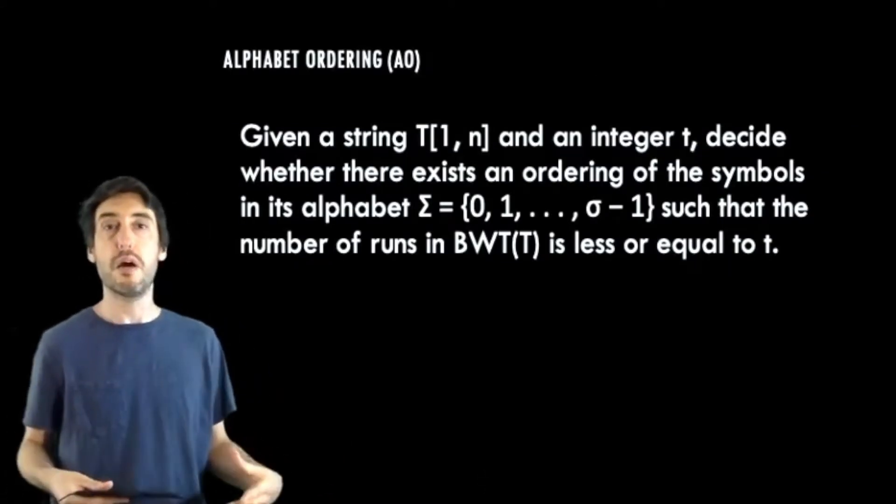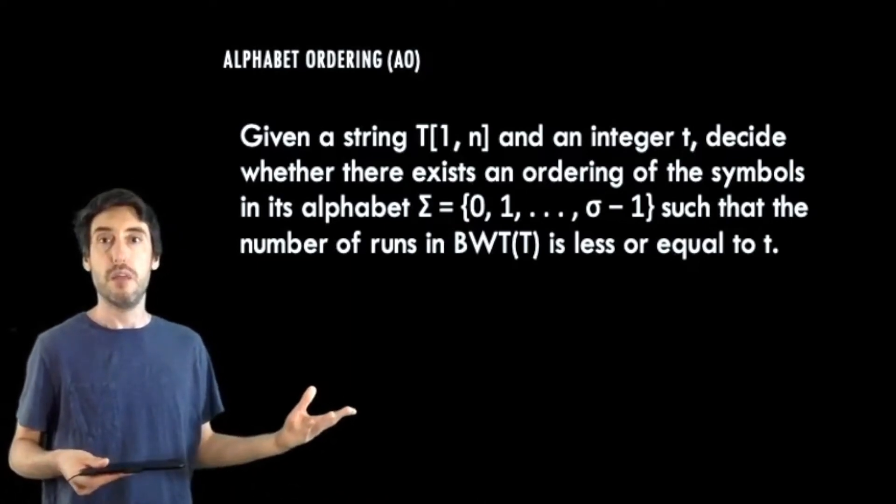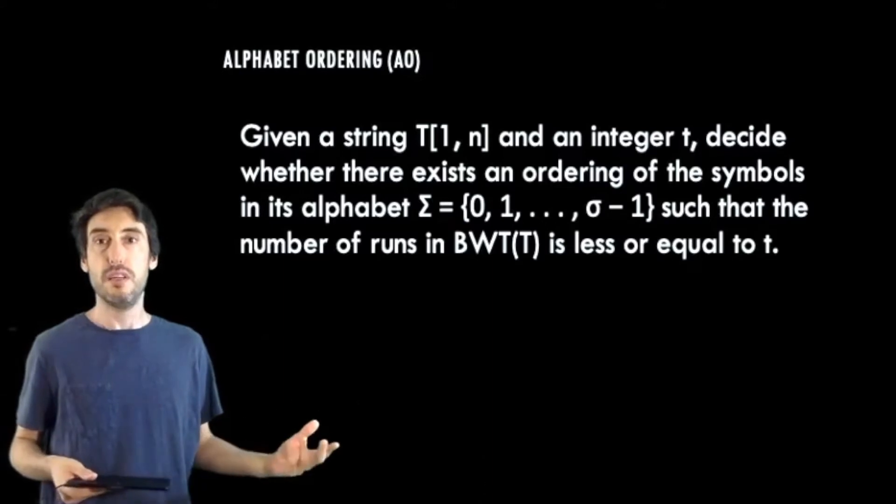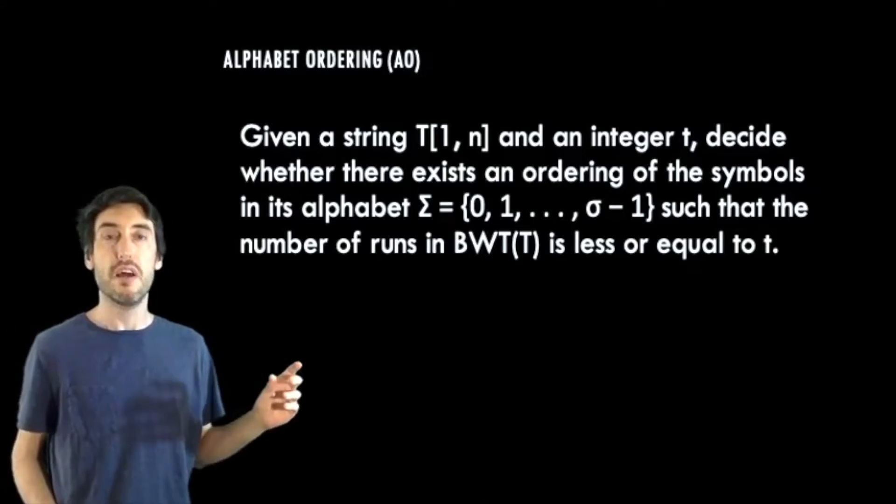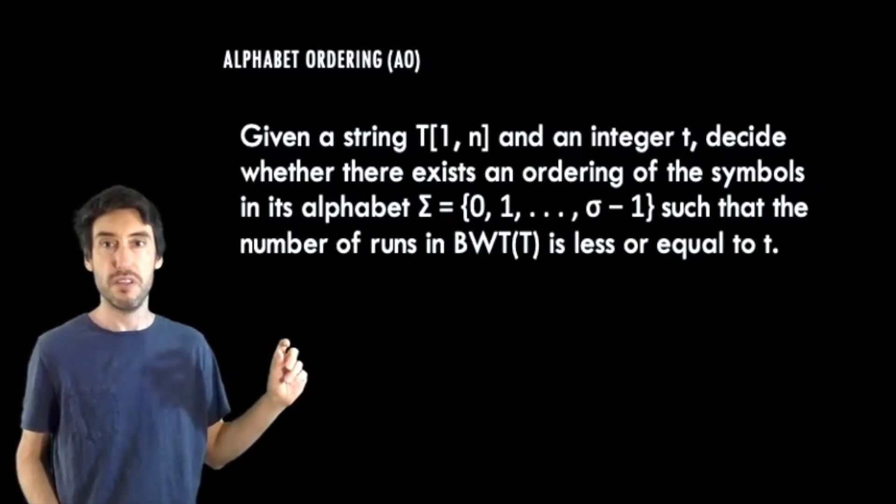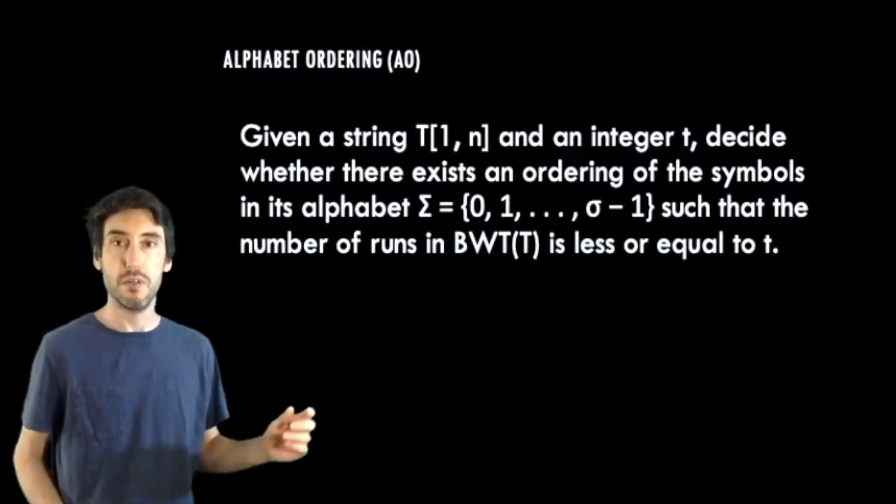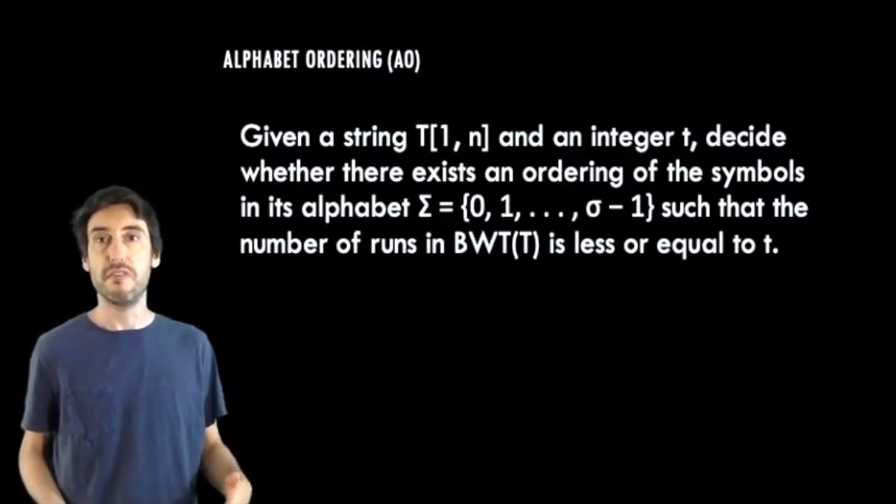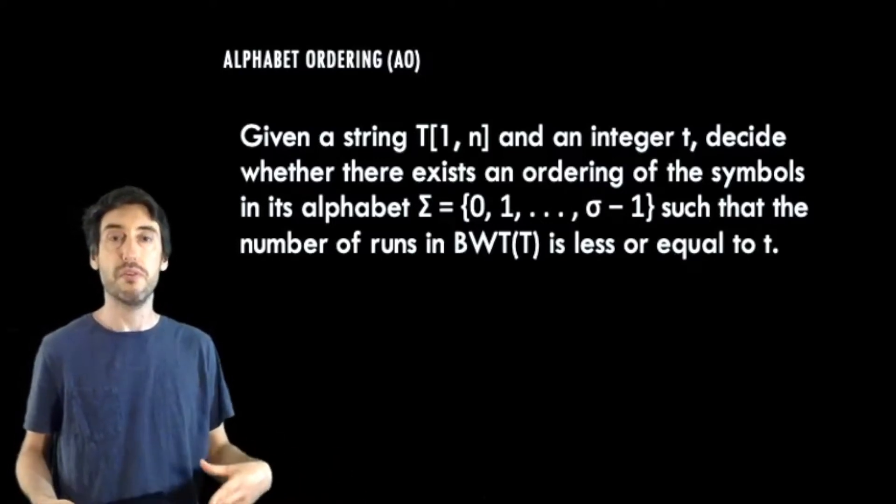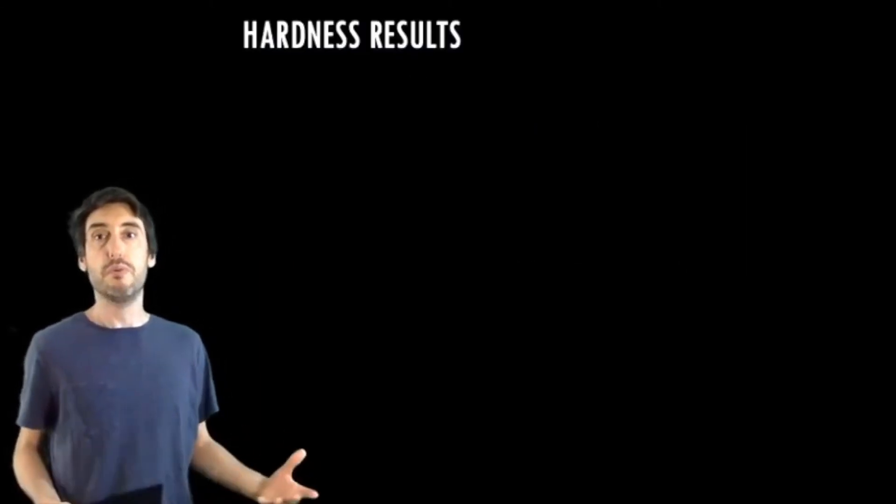Okay, so let us formalize the problem now that we wish to study. We will call this problem alphabet ordering, and abbreviate it as AO. Given a string t, indexed from 1 to n, and an integer little t, we wish to decide whether there exists an ordering of the symbols in the alphabet, 0, 1, sigma minus 1, such that the number of runs in BWT is less or equal to little t. Now this is a decision problem, but the optimization problem is defined as you might expect. You need to find an alphabet ordering which minimizes the number of runs in the BWT.